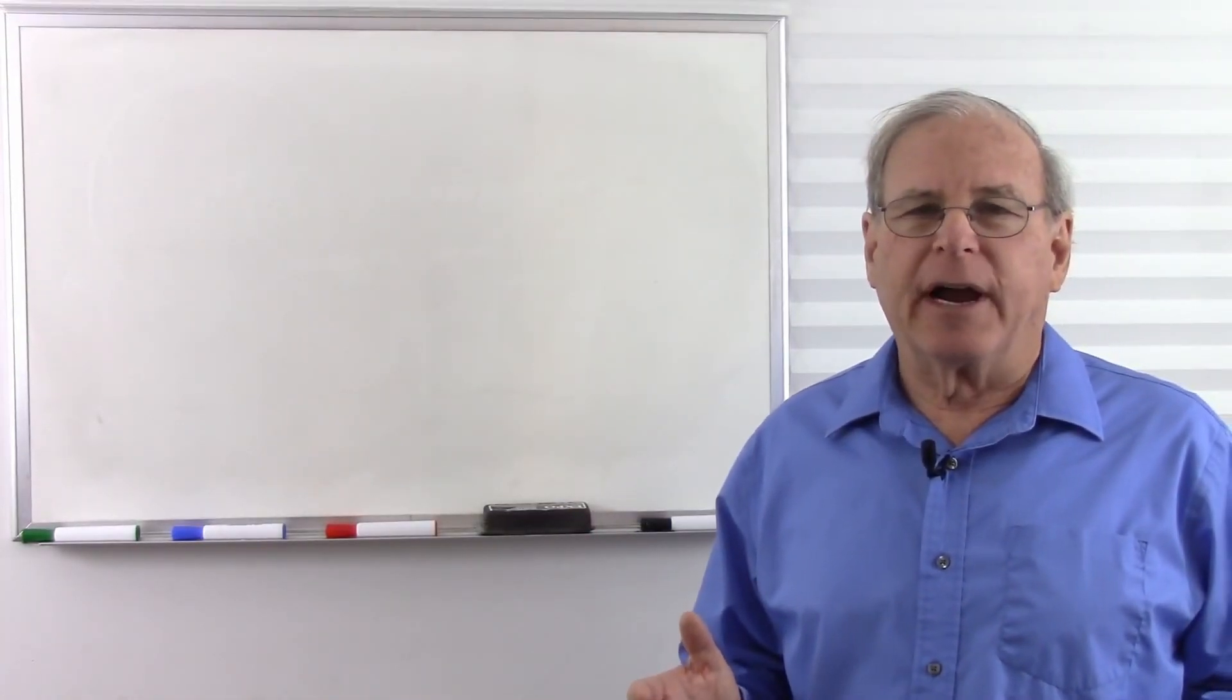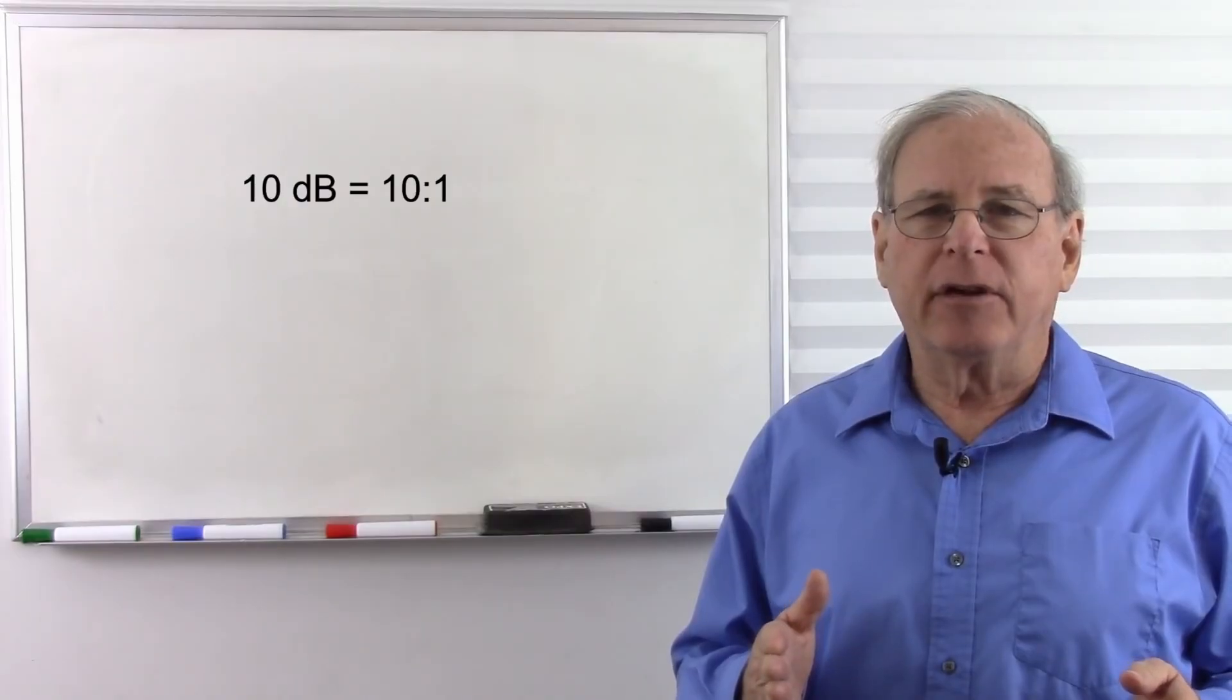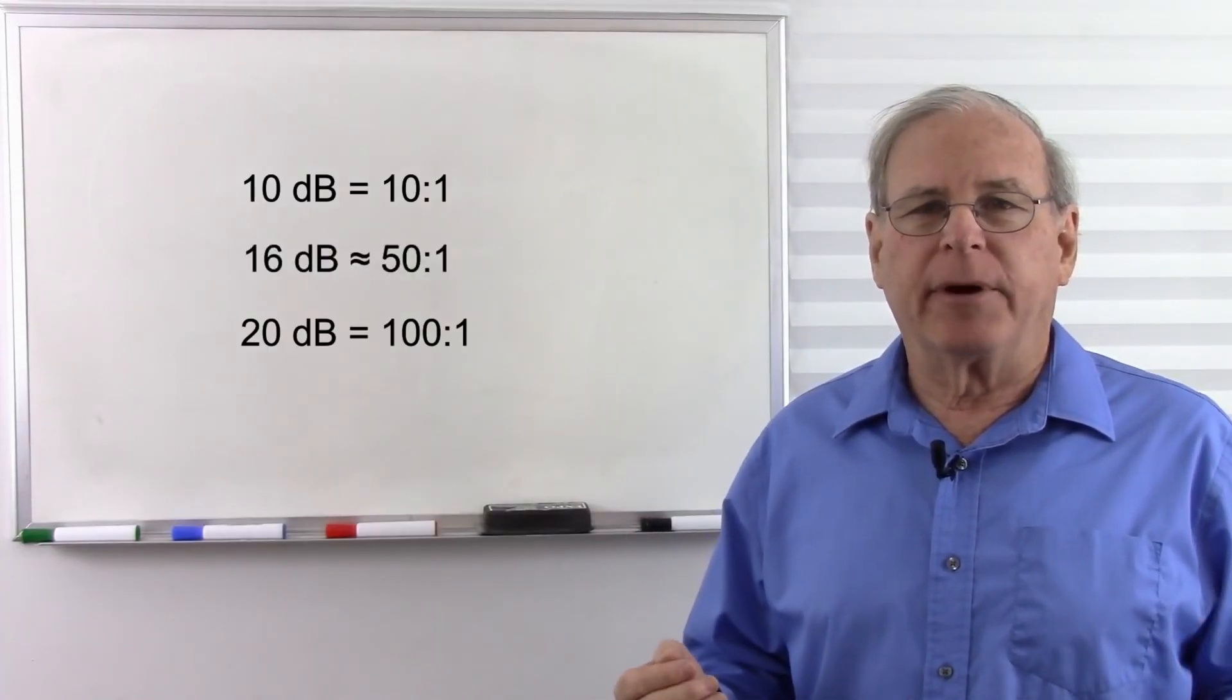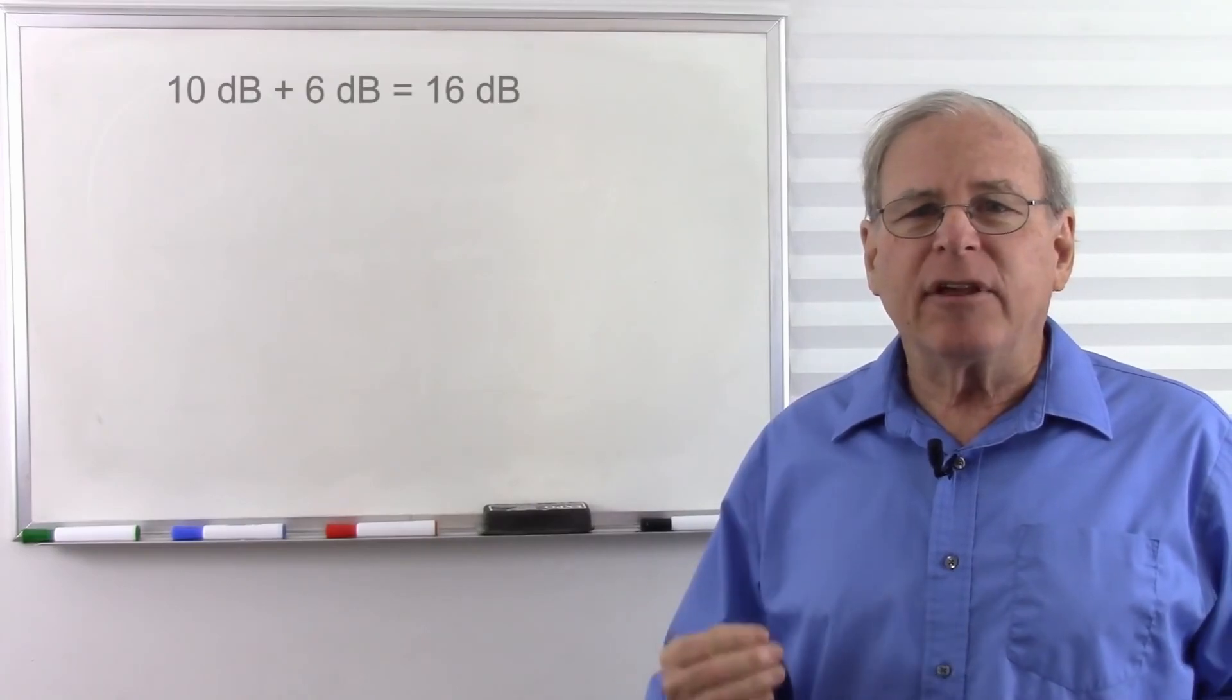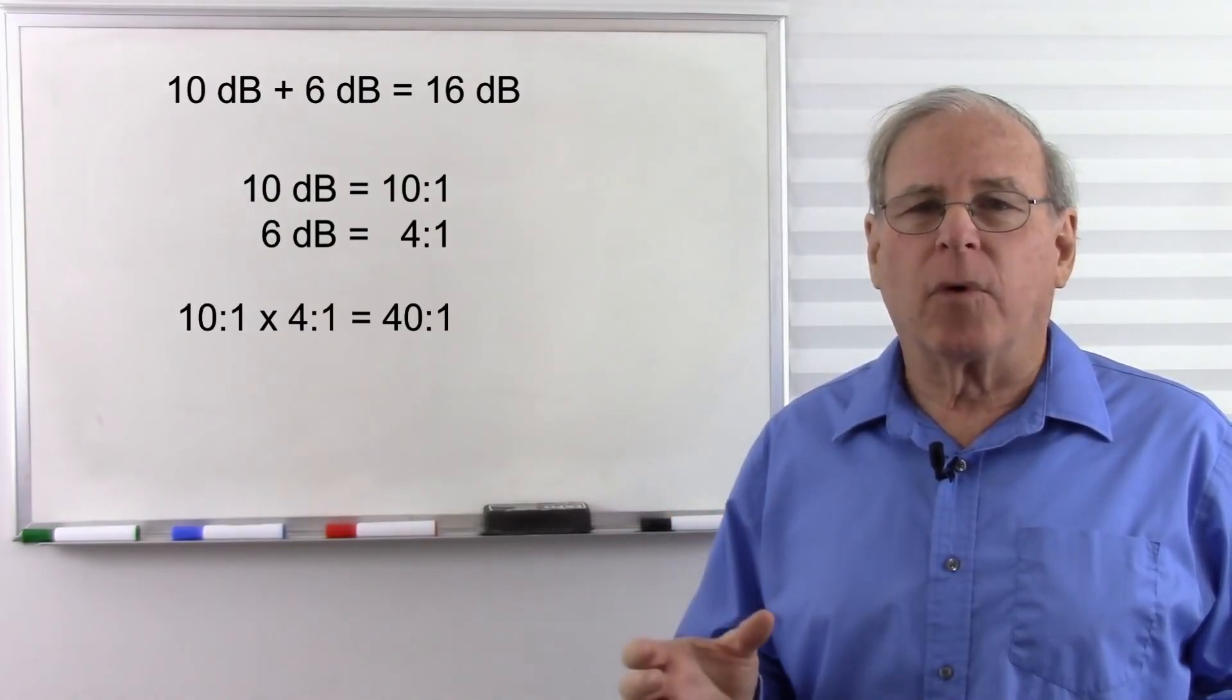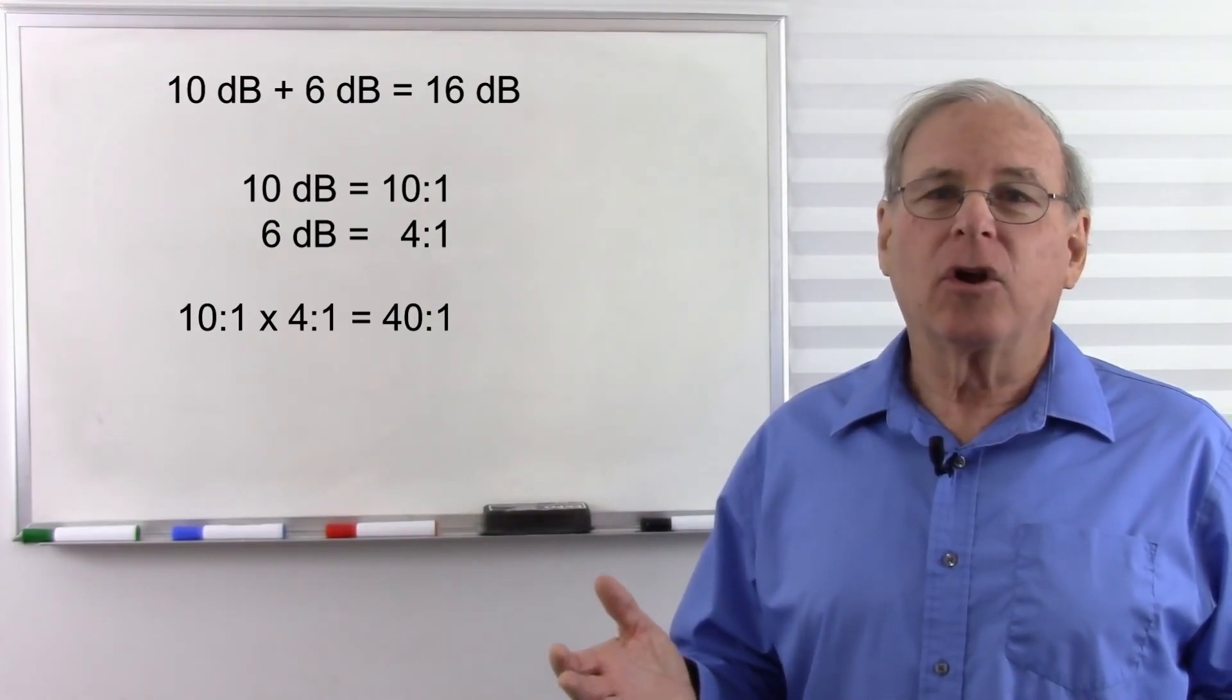Let's say I have an amplifier with a 16 dB gain. If I put in 1 watt, how many watts am I going to get out? Well, 10 dB is 10 to 1, and 20 dB is 100 to 1, so 16 dB is somewhere in the middle, maybe around 50 to 1. So if I put in 1 watt, I get about 50 watts out, and that's probably close enough. But it's easy to narrow down more than that. 10 dB is 10 to 1, and 6 dB is 4 to 1, so 10 times 4 is 40 to 1. So if I put in 1 watt, I get 40 watts out. Not bad, and hardly any math.